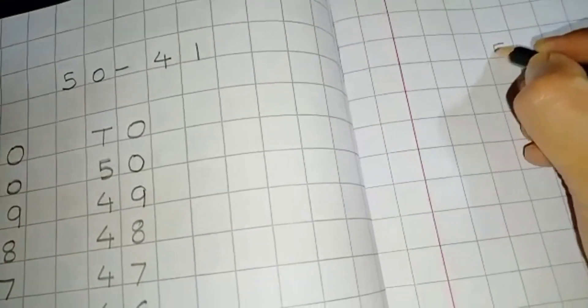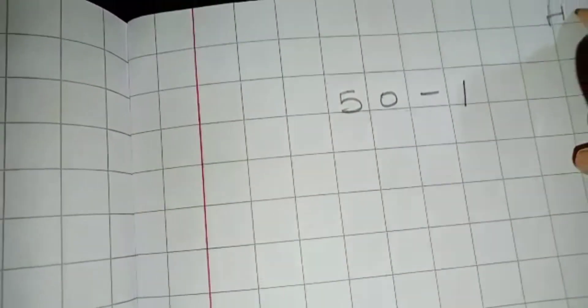Understood? And for homework you will write from 50 to 1. That is your homework.